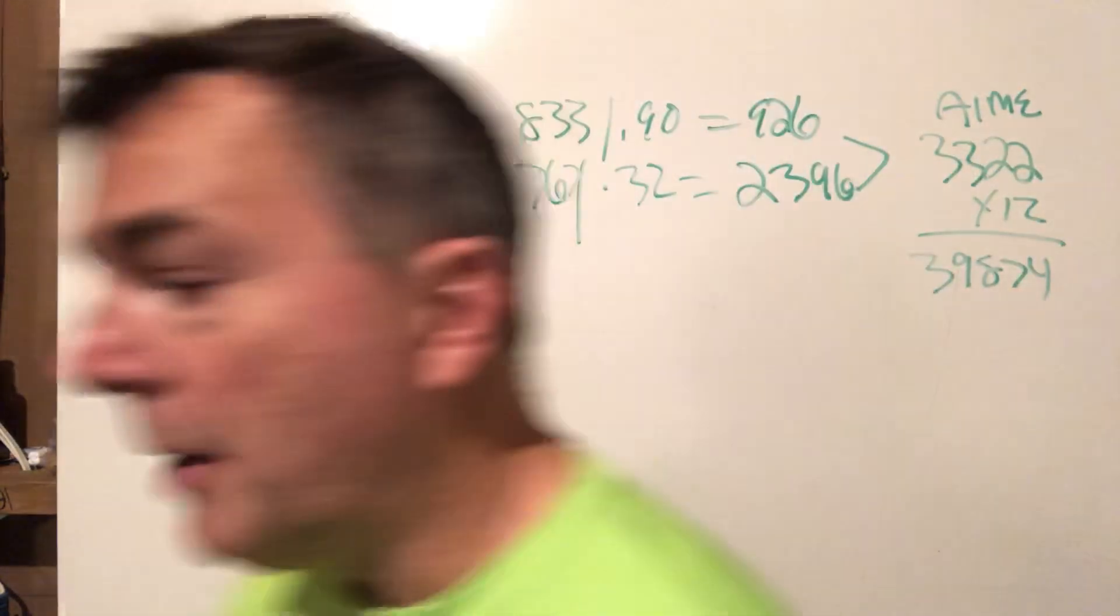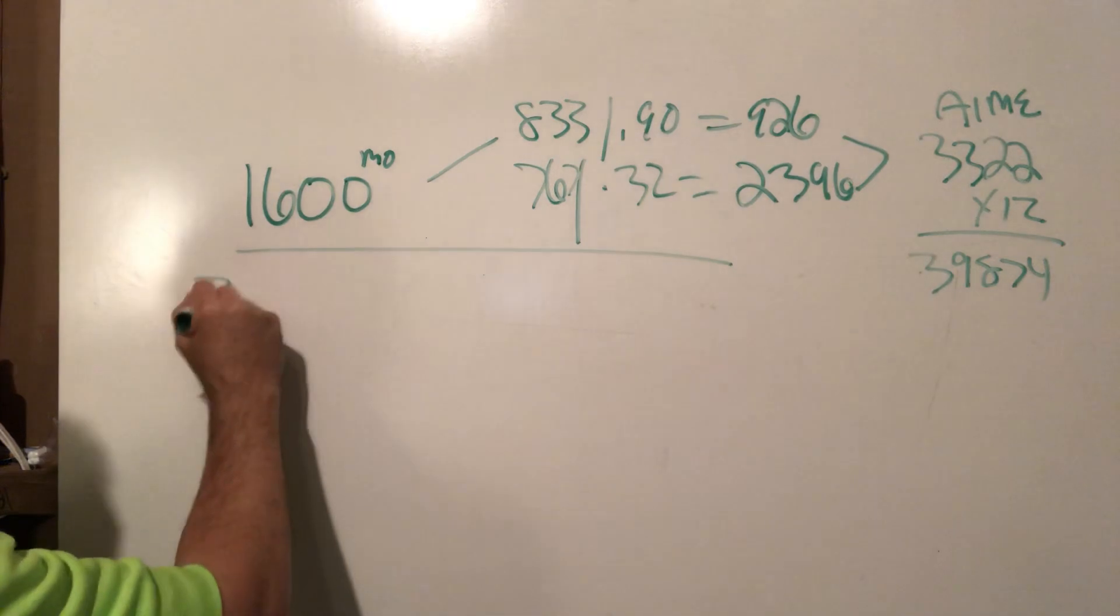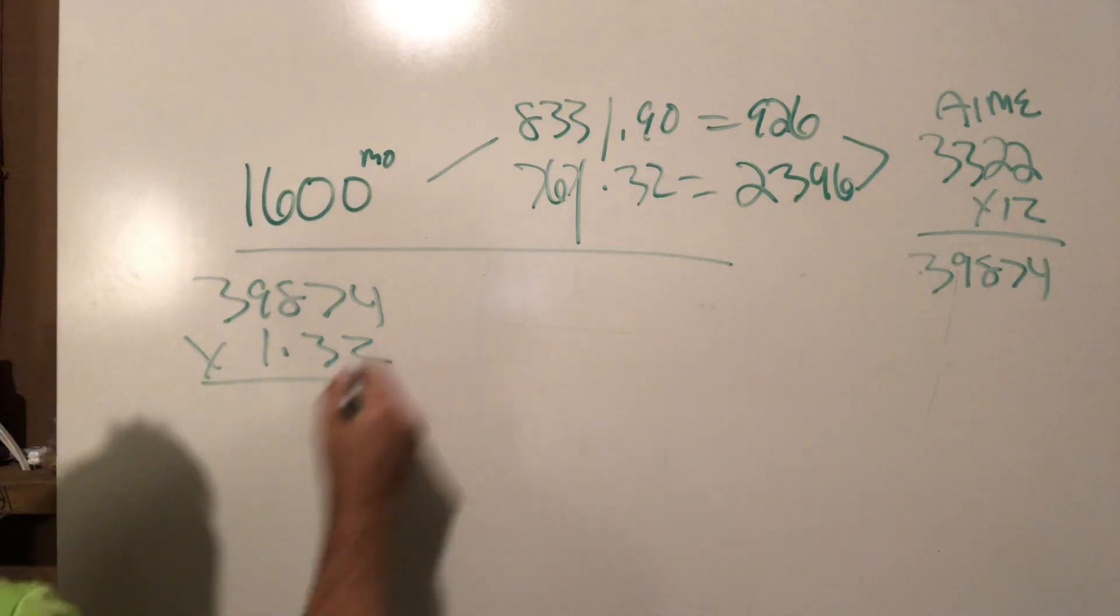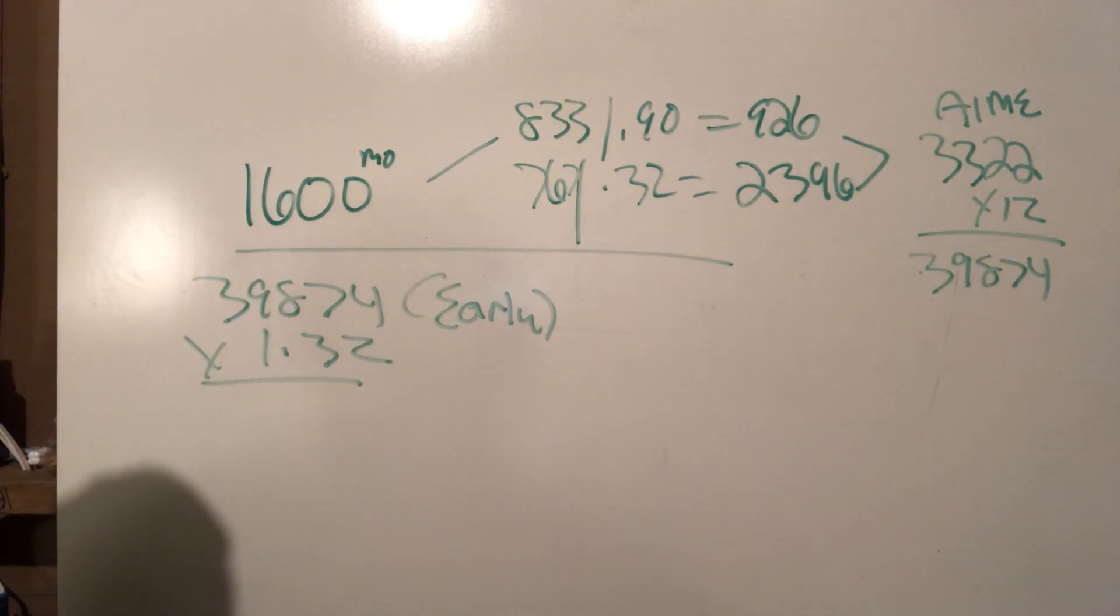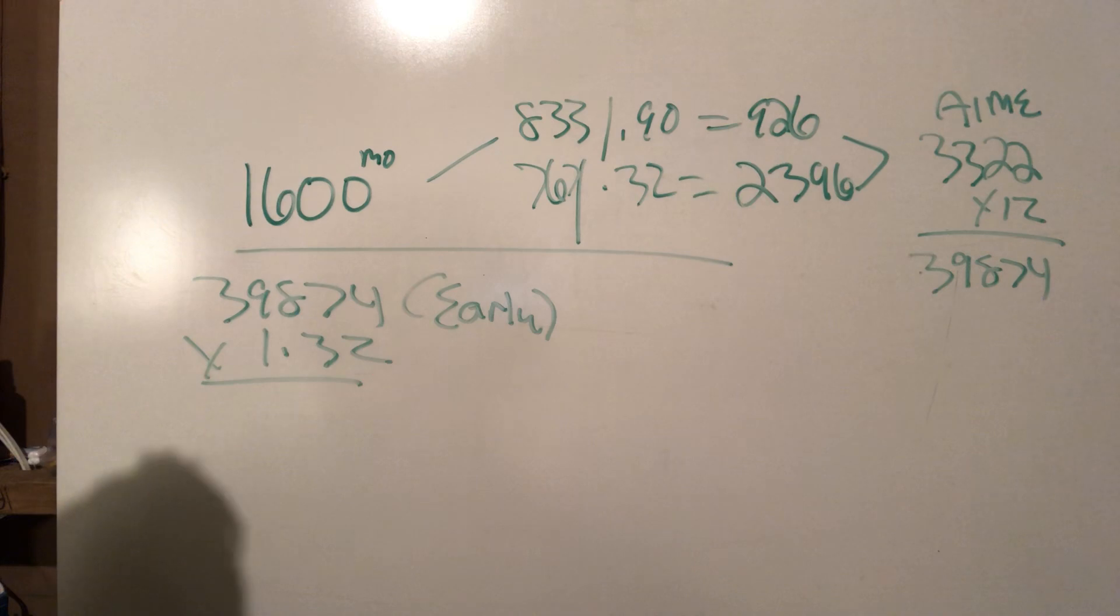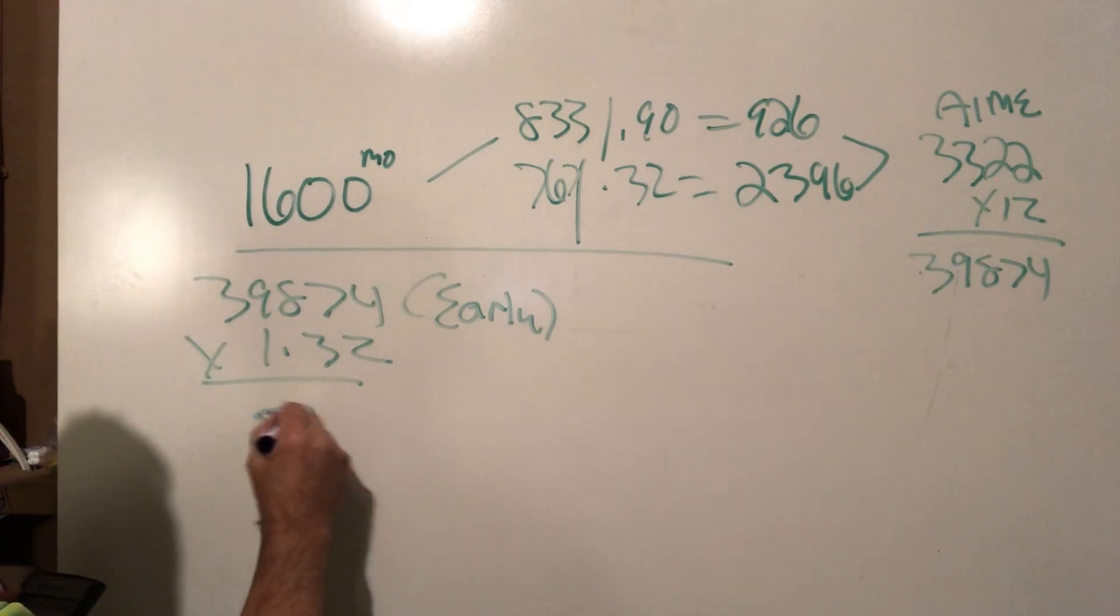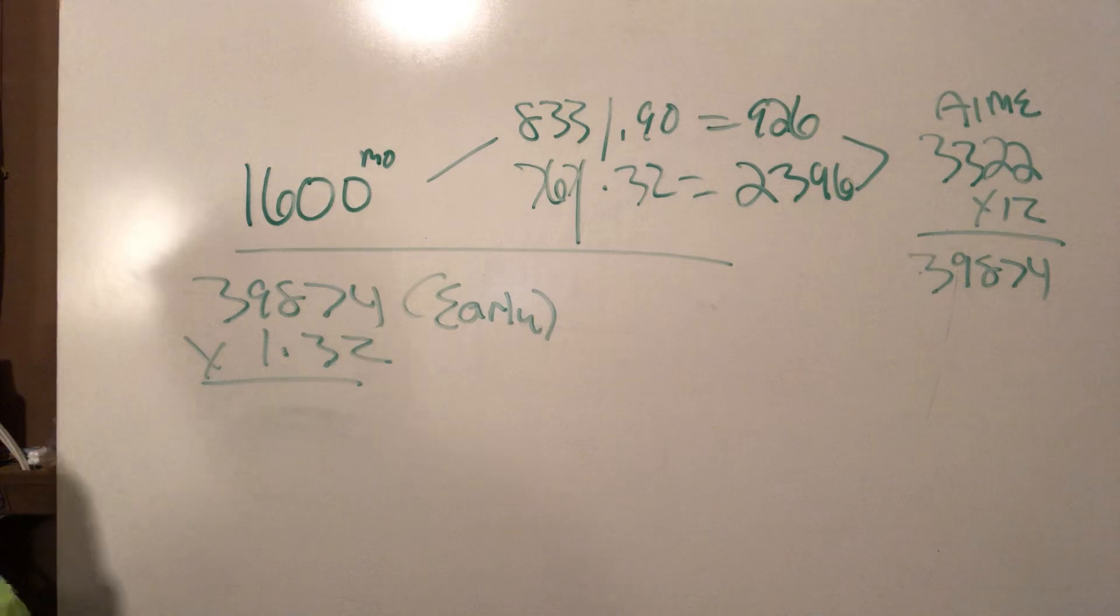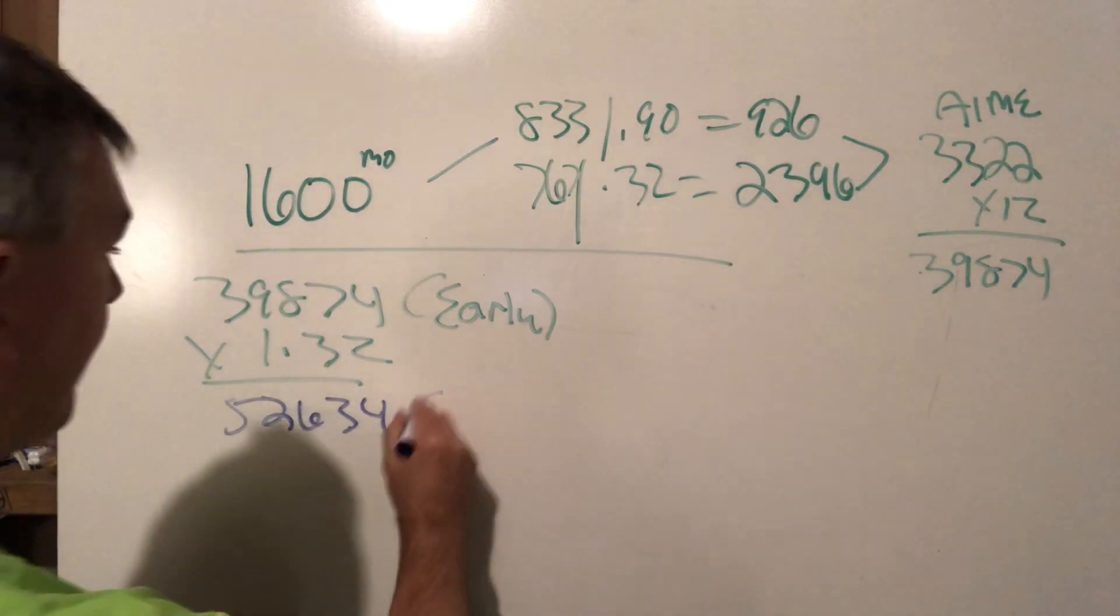We add these two together, 2396 plus 926, and so he has $3,322 a month is his AIME. Now we times that by 12 to get an annual benefit here times 12, which is 39,874. So again, that's what his benefit is. But I don't think that's it actually. I think he took this early. So what we're going to do is we're going to take 39,874 and we're going to times it by 1.32 for full retirement age.